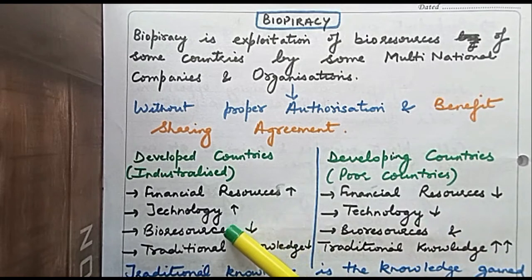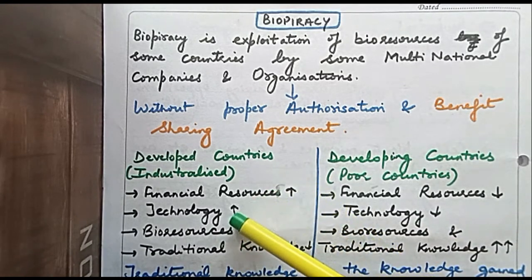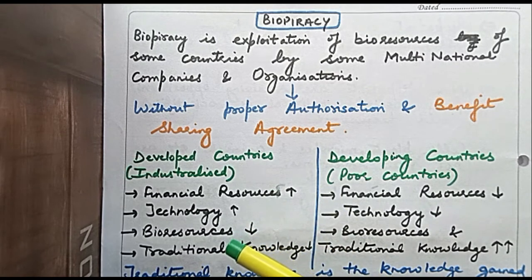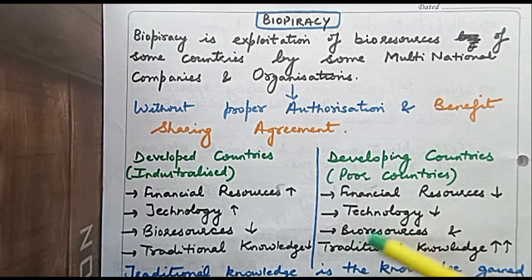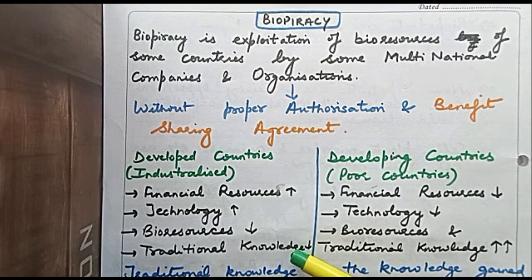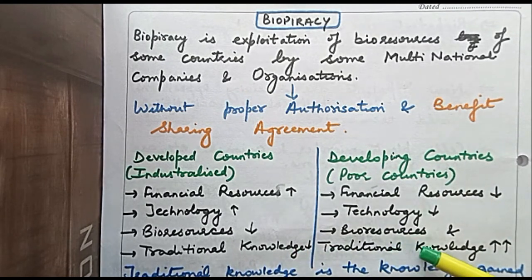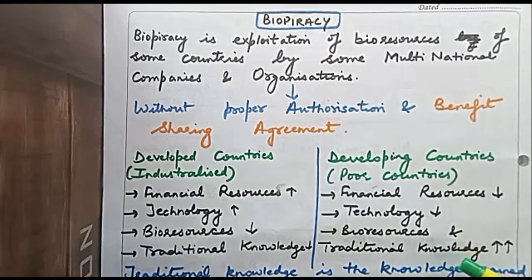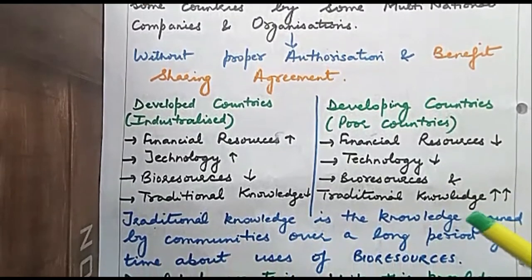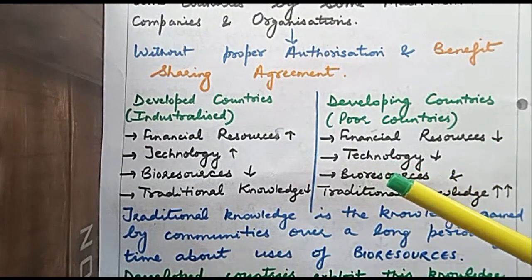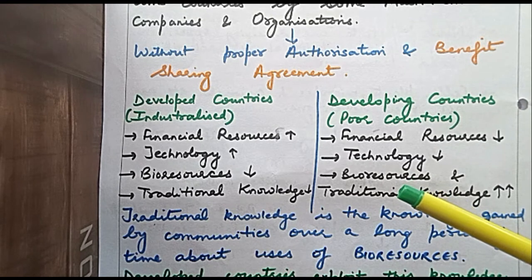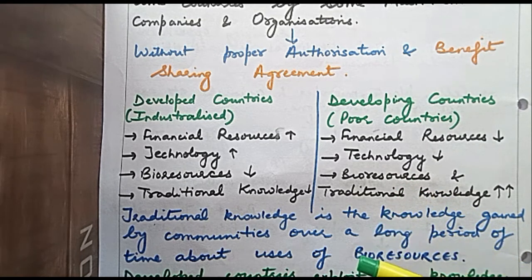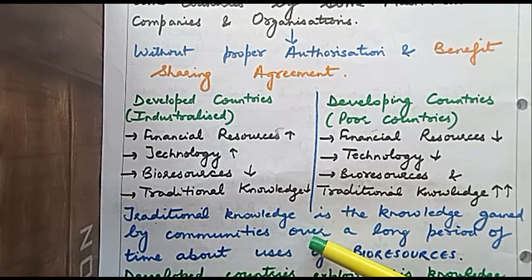Developed countries have money and technology but lack natural bioresources. Developing countries, however, have very enriched bioresources. Also, developed countries have comparatively low traditional knowledge, while developing countries have abundant traditional knowledge. Bioresources means any plant, animal, or microbe present in nature. Traditional knowledge is the knowledge gained by communities over a long period of time.